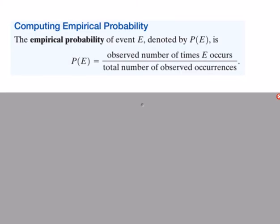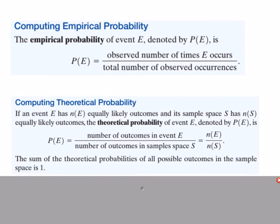Now moving from set notation into probability: probability is the number of times an event occurs divided by the total number of times it could occur — part divided by whole. There are two types of simple probability. Theoretical probability is calculated before events occur — for example, flipping a coin ten times should theoretically give heads five times, since there's a one-in-two chance.